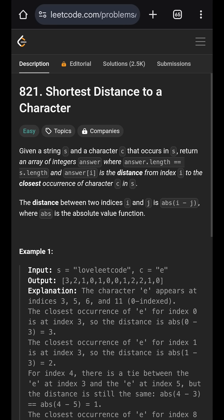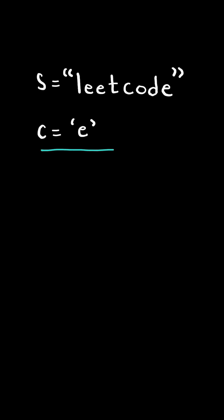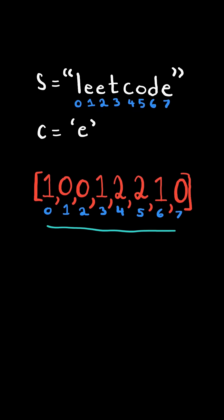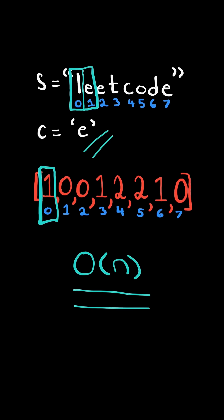Shortest distance to a character. Given a string s and a character c, return an output array. Array at i is the distance from s at i to the closest character c. We will solve this in O(n) time.